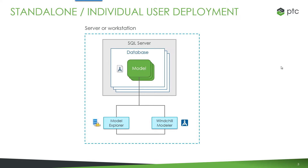At the bottom, we have the two main applications: Windchill Modeler itself and Model Explorer, which is used to view and manage models. At the top of the diagram, we have the server components — the Windchill Modeler server and the SQL Server database that contains the model files. This type of deployment is known as the standalone individual user deployment and is most suited for small situations and for personal use.